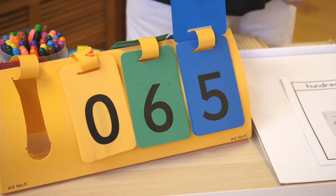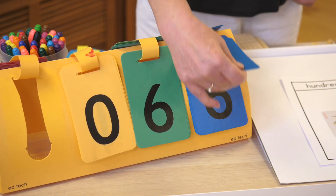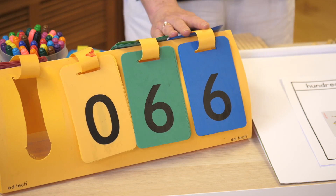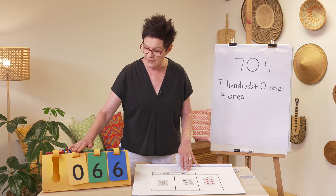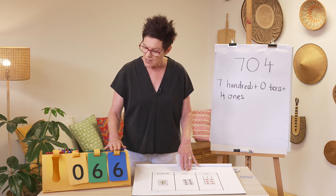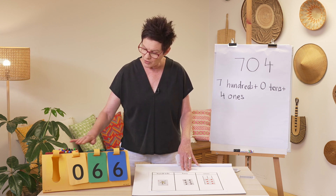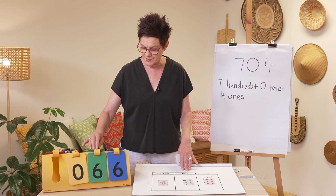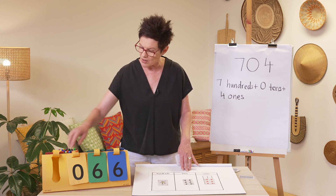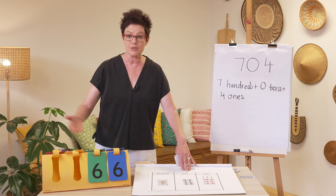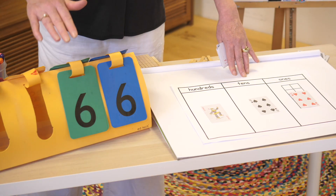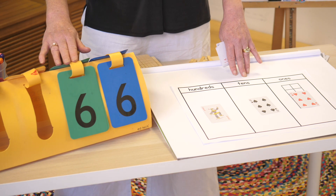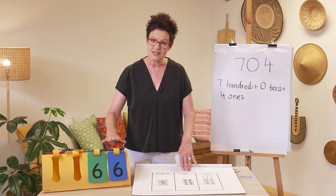Lucky last — what is this number? I have zero in the hundreds, six in the tens, and six in the ones. I'm not going to say zero-sixty-six. I'm going to turn this into what we call a two-digit number — there are none of these hundreds — so I say this number as a two-digit number: 66.